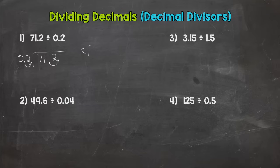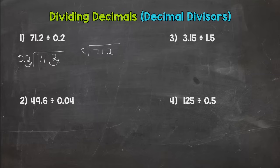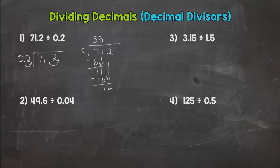Then I rewrite my problem. My divisor is now 2 and my dividend is now 712. Moving that decimal puts the decimal in the correct place for my quotient. Now I go through my long division process: 7 divided by 2 is 3. Three times 2 is 6. Subtract, I get 1. Bring down the 1. Eleven divided by 2 is 5. Five times 2 is 10. Subtract, I get 1. Bring down the 2. Twelve divided by 2 is 6. Six times 2 is 12. Subtract, I get a clean zero.